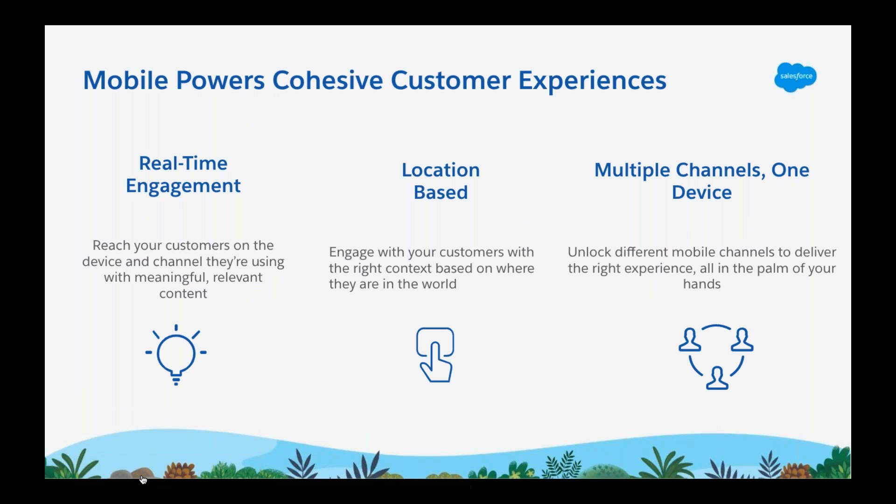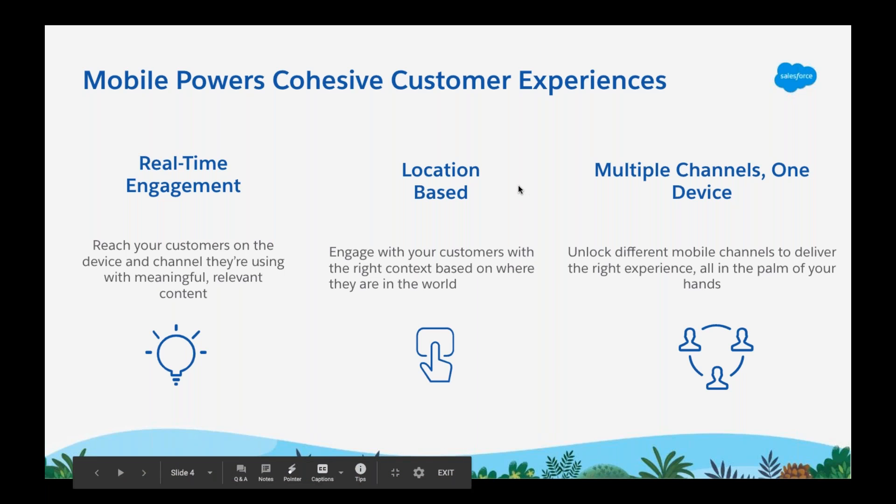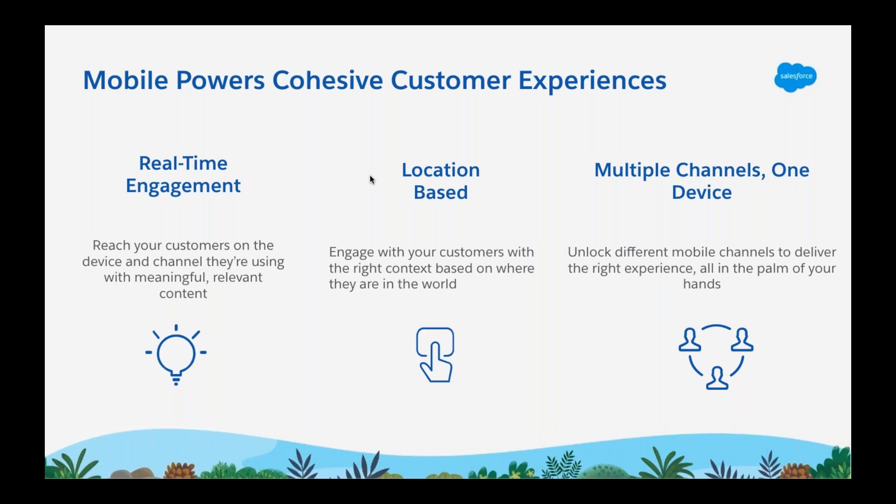Before handing it over to Tyler to define geolocation, I want to give an overview of mobile as a channel. When we talk about mobile, we're often grouping SMS, chat apps, mobile app engagement such as push notifications, in-app messaging, app inbox messages, and even mobile-optimized websites together. From our State of the Connected Customer report, we saw that 57% of customers have stopped buying from a company because a competitor provided a better experience. Mobile is a great differentiator because it allows for real-time engagement — you can reach your customers on the device and channel they're using to create meaningful, relevant content.